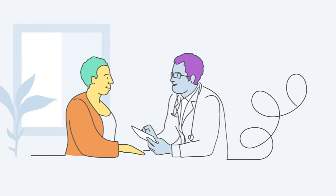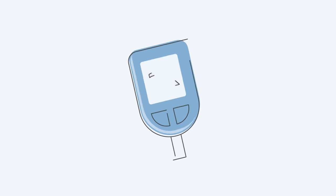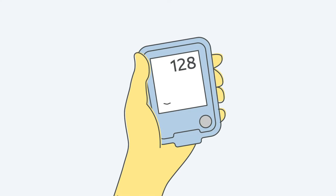If you use a meter, you may need to check your blood sugar up to three times a day, depending on your individual plan. If you use a CGM, you can see your levels anytime.